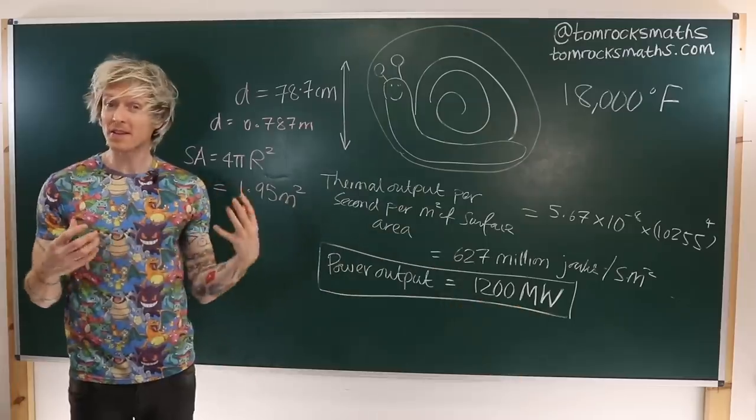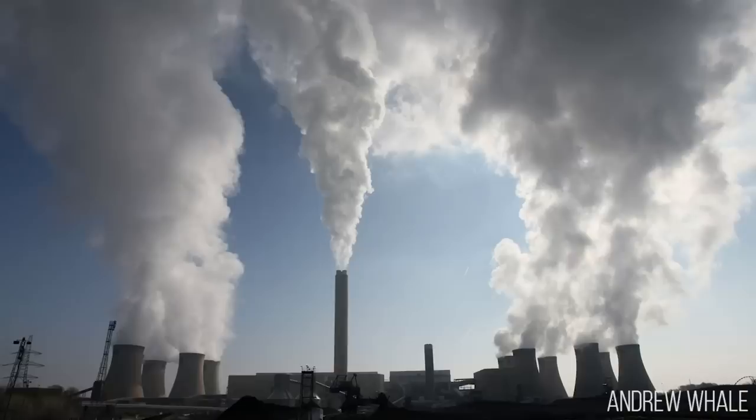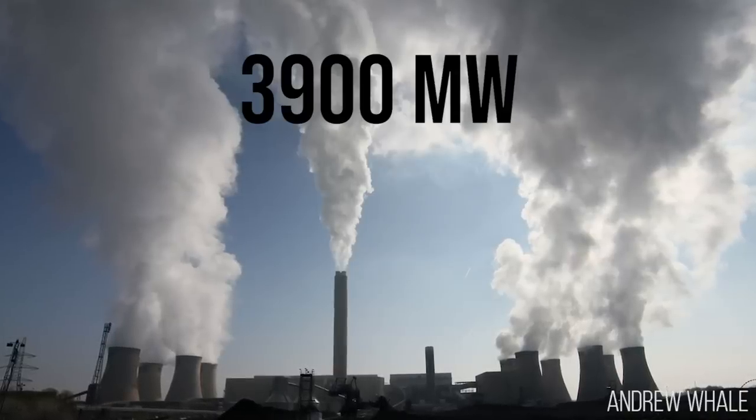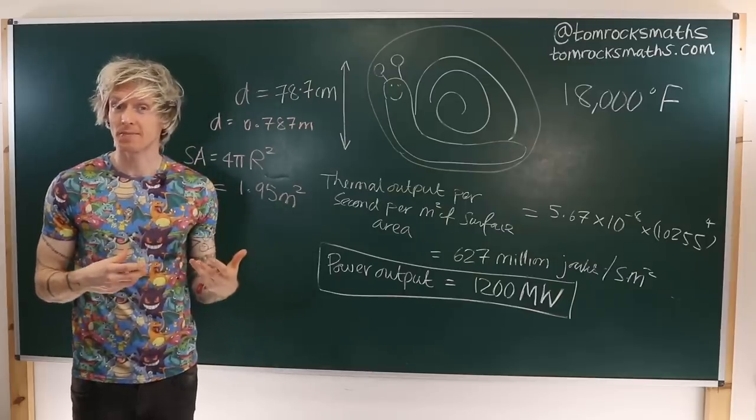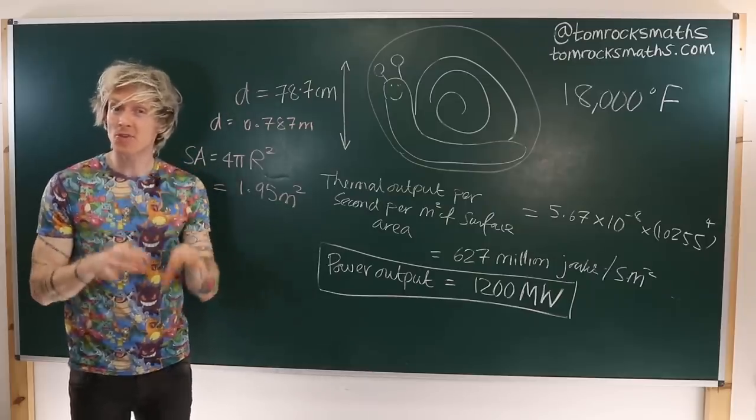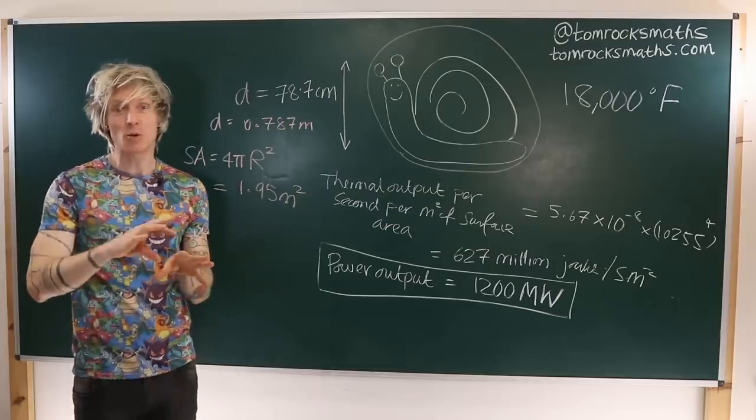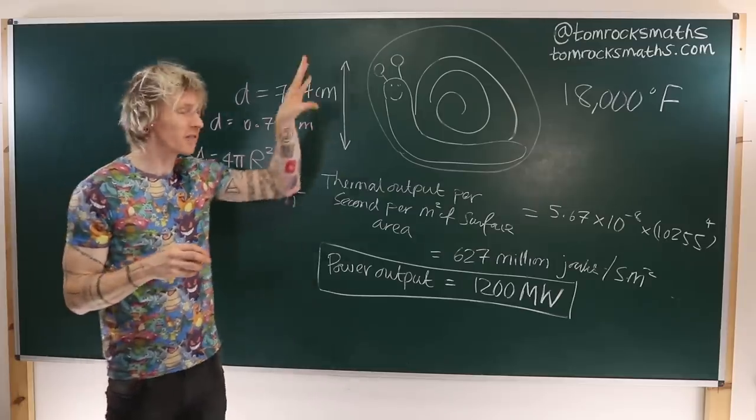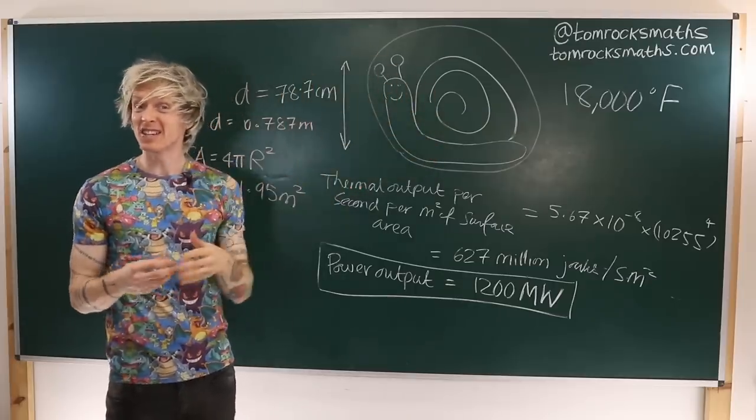For comparison, the UK's largest power station, Drax, has an output of 3900 megawatts, which is enough to provide 6% of the UK's power consumption. This means 3 Magcargo will provide enough power to equal this power station. Or, with just over 50 of these rock snail Pokemon, we could, in theory, power the entire country.